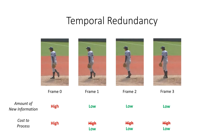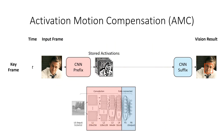Our system uses a proportionally small amount of computation for small amounts of change. To do this, we divide any given convolutional neural network into a CNN prefix and a CNN suffix. When computing a keyframe — in other words, normal computation — we store the intermediate activations, the output of the CNN prefix.